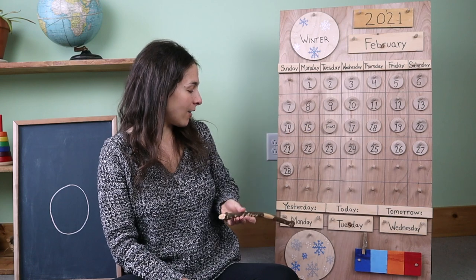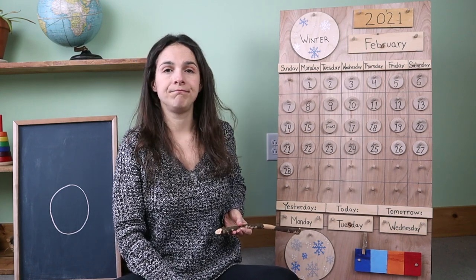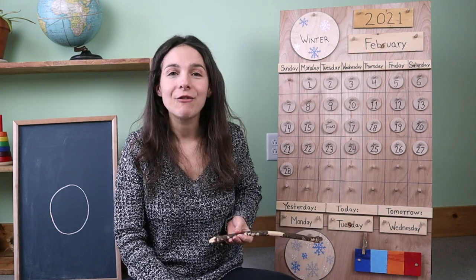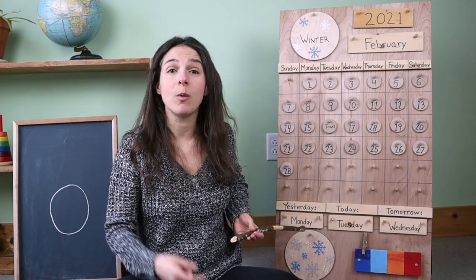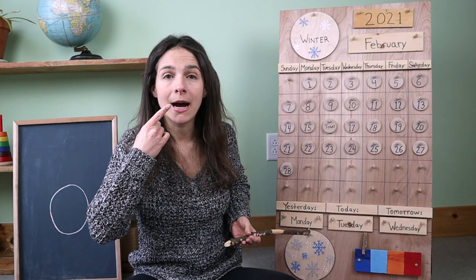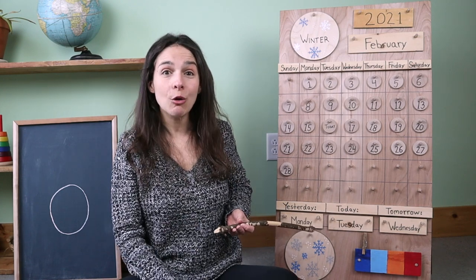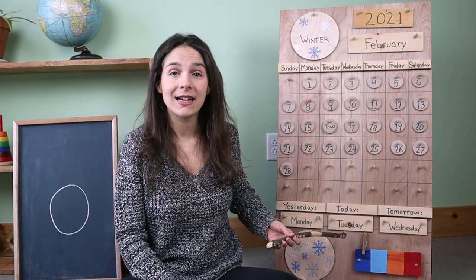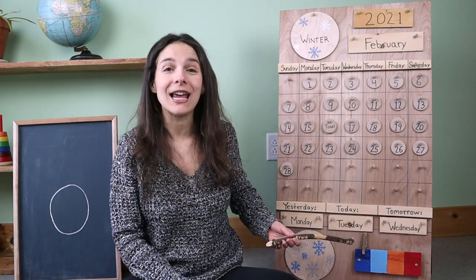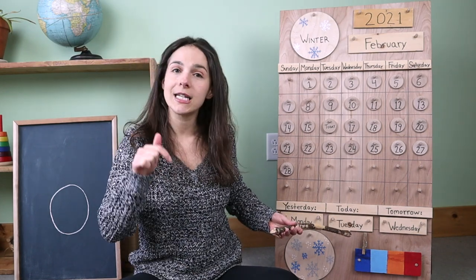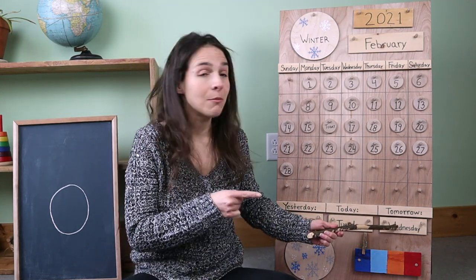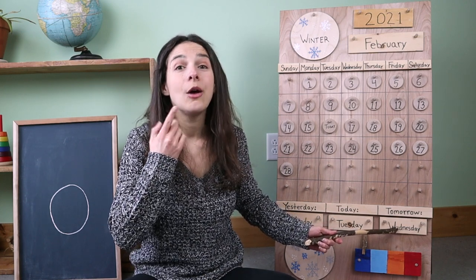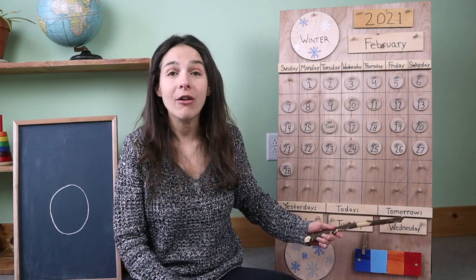Let's go back down to right here. Does anybody remember what the day was yesterday? I'll give you a clue — yesterday was muh, muh. Monday. You're right. Yesterday was Monday. So that means that today is Tuesday. And if today is Tuesday, that means that tomorrow will be Wednesday.